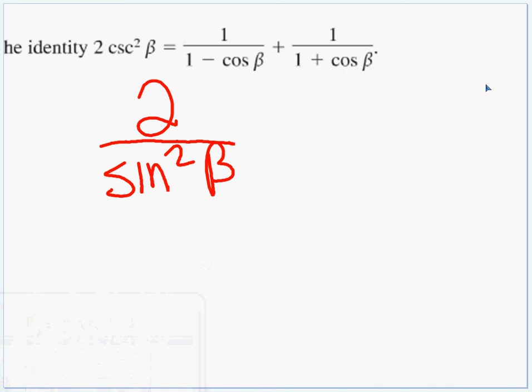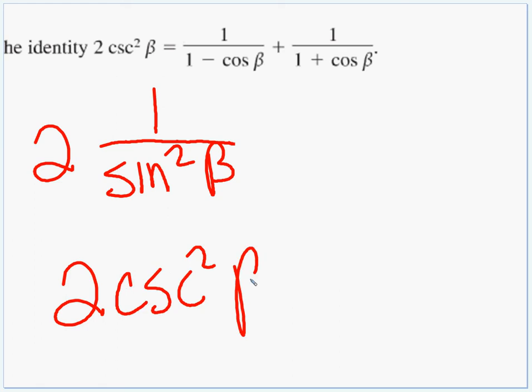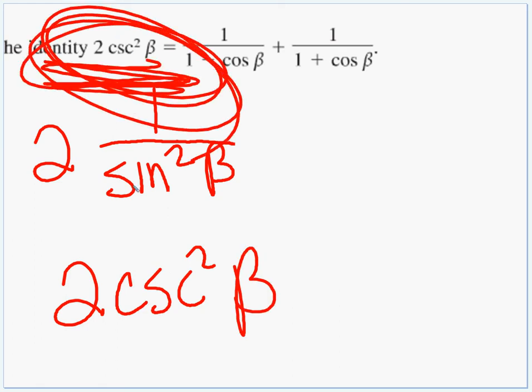Now again, you know, the 2 on there, that does throw some students. Just imagine that 2 slips down and there's a placeholder 1 there. So we've got 2 and then 1 over sine squared. Well, that's cosecant squared. And that is our finish line. Mission accomplished.